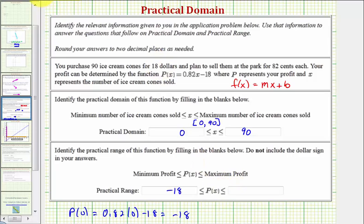And to find the upper bound, we need to find the profit when you sell all 90 ice cream cones. So P(90) would be equal to 0.82 times 90 minus 18. And I've already determined this to save some time—it's 55.8, which represents $55.80. This would be the upper bound of our practical range.